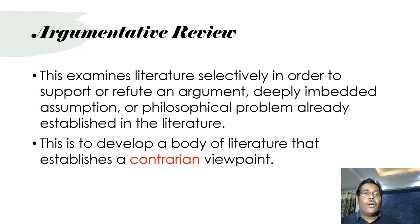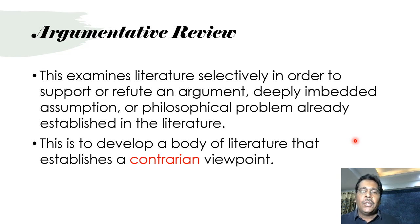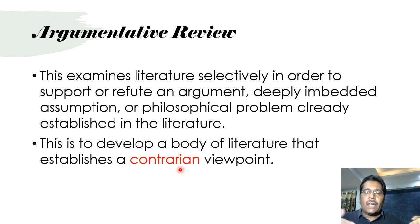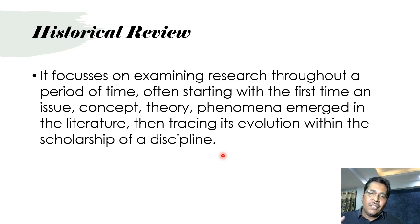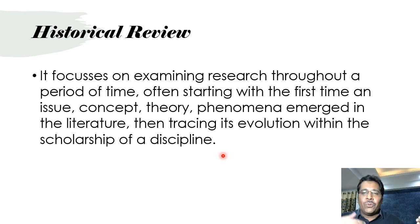An argumentative review examines literature selectively in order to support or refute an argument — either building a contrarian argument or supporting a particular point of view. A historical review focuses on examining research throughout a period of time, tracing how a concept has emerged over the years — for example, the concept of the public sphere beginning from the 1950s and 60s and how it has developed to incorporate new media of the present age.